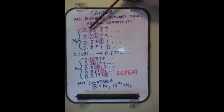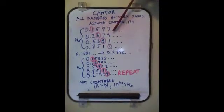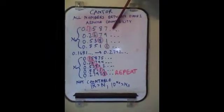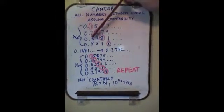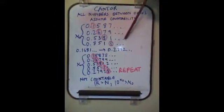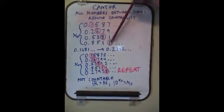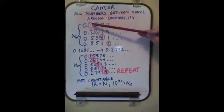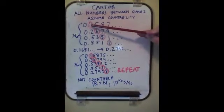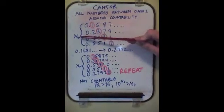Let's just pick them at random: 0.1587..., whatever numbers would be here; 0.2679...; 0.5381...; 0.9511.... Now, we have, in base 10, 10 to the aleph-null possible permutations.